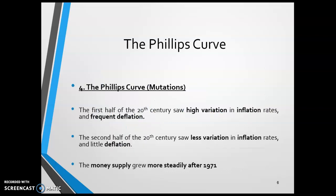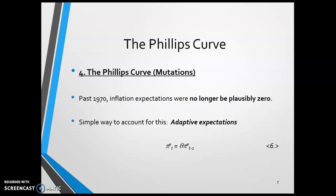So what's the implication? Well, in the first half of the 20th century, we had high variation in inflation rates, frequent deflation, and average inflation rates were about zero. In the second half of the 20th century, we saw much less variation in inflation rates, very little deflation, and average inflation rates were about two to three percent. The reason for that, as mentioned, was a change in the money supply.